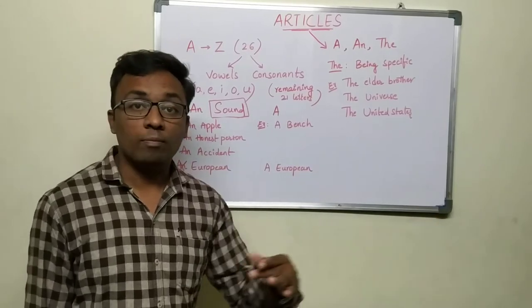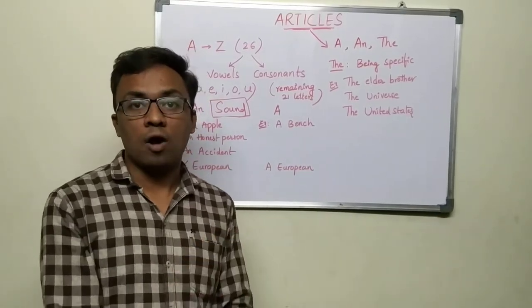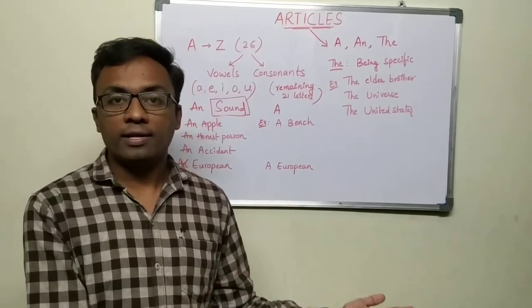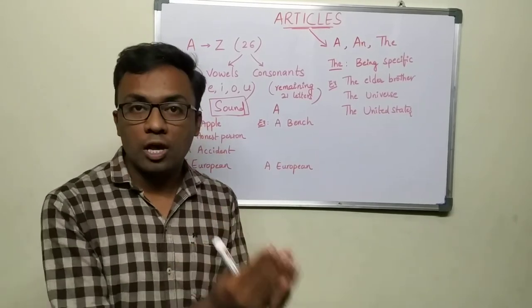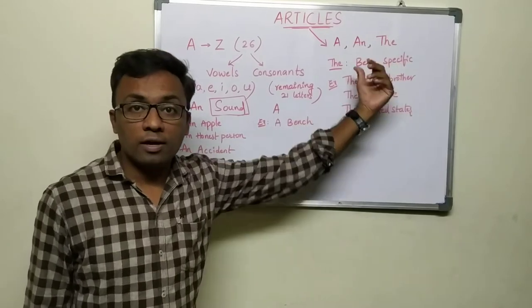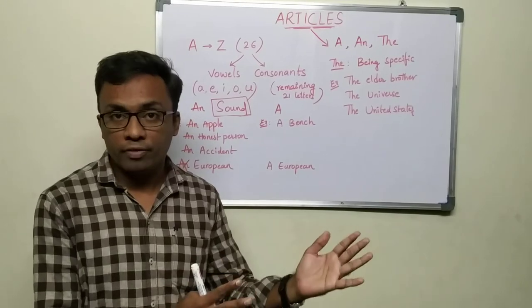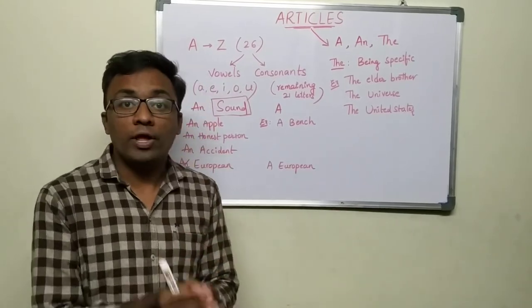'A' is used for consonant sounds, like 'a bench,' 'a cat,' or 'it was a mistake.' Basically, you're referring to something that starts with a consonant sound. These are called indefinite articles. It's very clear - just concentrate on the sound of the noun. Now, what about 'the'?